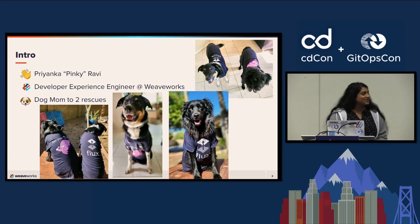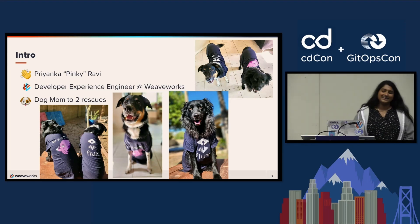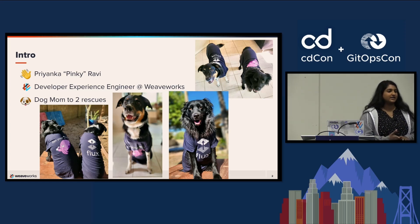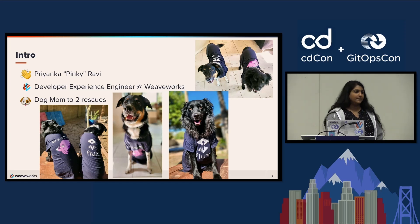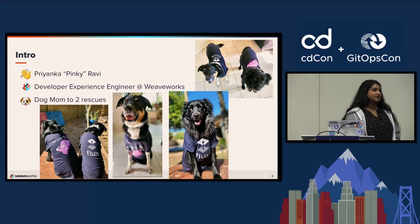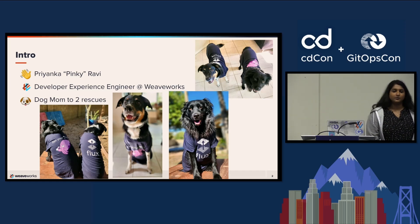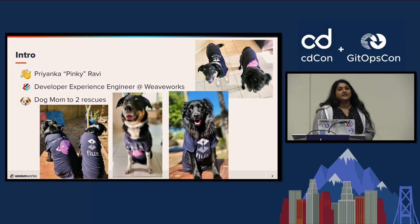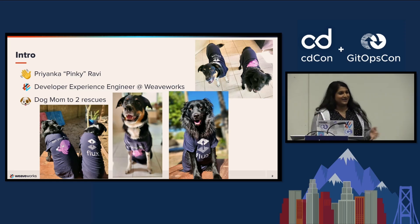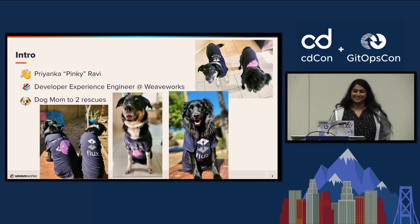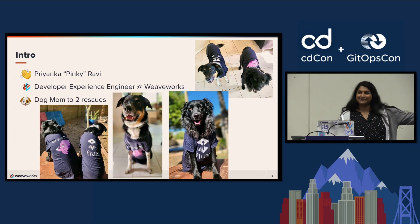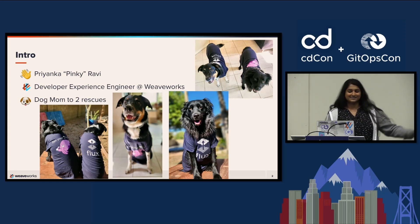My name is Priyanka Ravi, I go by Pinky, and I'm a developer experience engineer at Weaveworks. I've been there for about a year and a half. Before that, I was at a company called State Farm, where I was on a team called the delivery engineering team. We helped implement GitOps at the company, so we were using Flux for our Kubernetes platform. That's how I got introduced to Flux and then the team at Weaveworks — I took the migration workshop and that's how I met them.